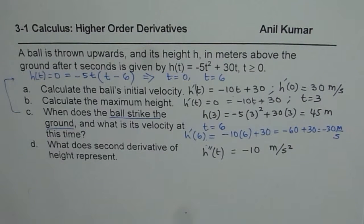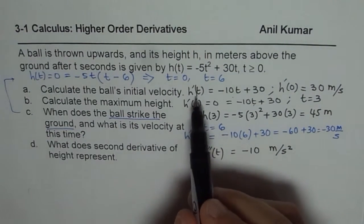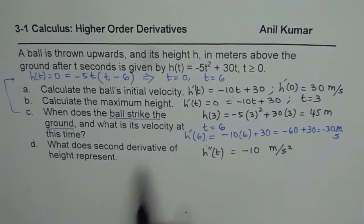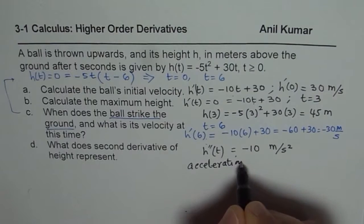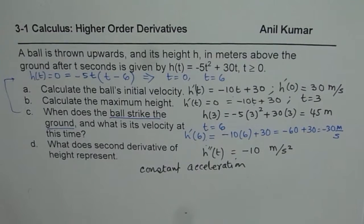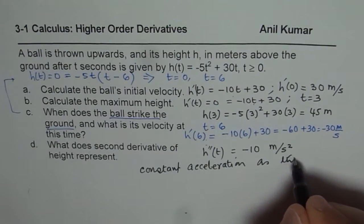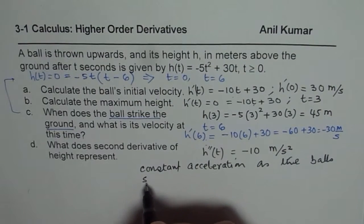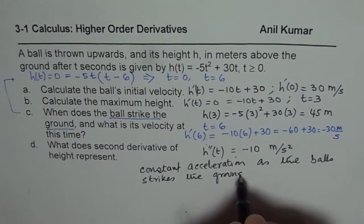What does that indicate? Now this is the acceleration due to gravity. This, that is a displacement change in height. Then velocity is rate of change of height and this is acceleration. So it is a constant acceleration. Let me write this as a constant because the value is -10. Constant acceleration as the ball strikes the ground, or comes downwards.